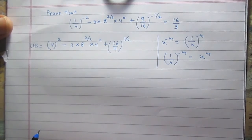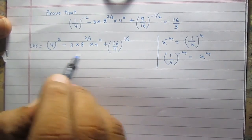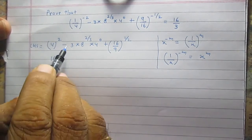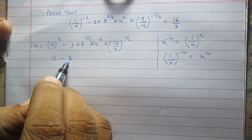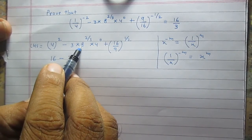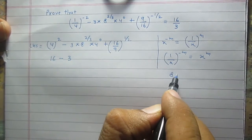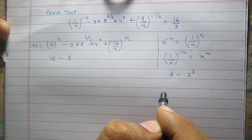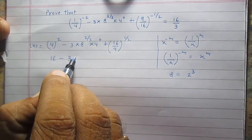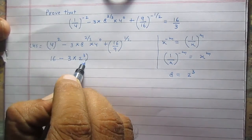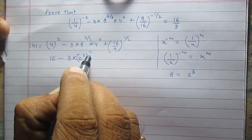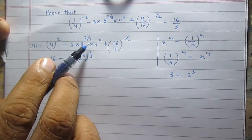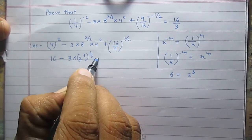Now, 4 raised to the power 2 is 16, minus 3 multiplied by 8 raised to the power 2/3. Since 8 can be written as 2 raised to the power 3, it becomes 3 multiplied by (2 raised to the power 3) raised to the power 2/3. Also, 4 raised to the power 0 equals 1.